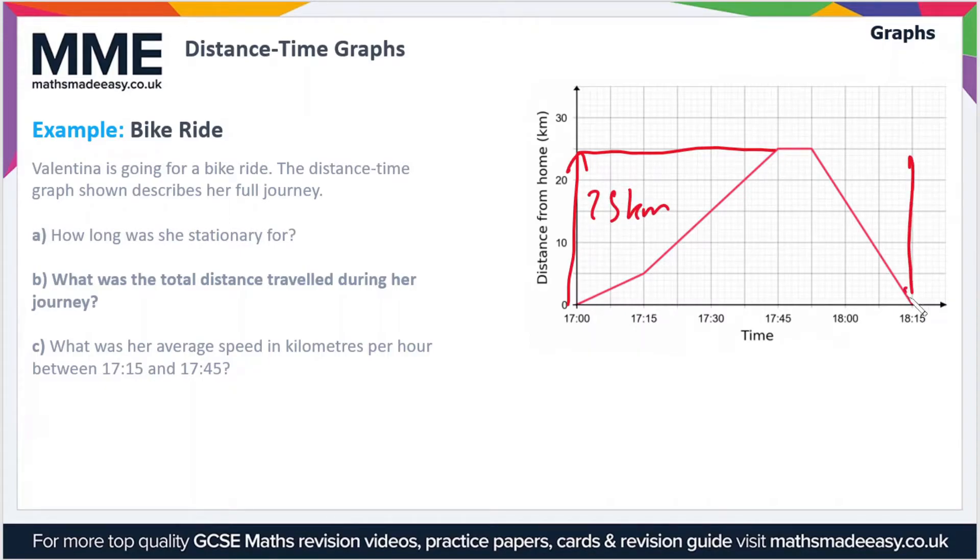She then goes 25 kilometers in the other direction back towards the starting point. So she's gone 25 kilometers one way, 25 kilometers back, so 25 plus 25 is 50 kilometers. That's the total distance that she's traveled during her journey.